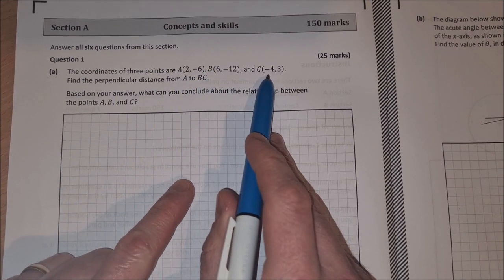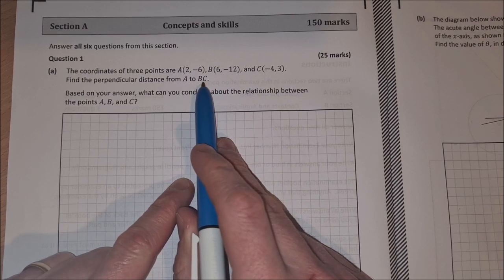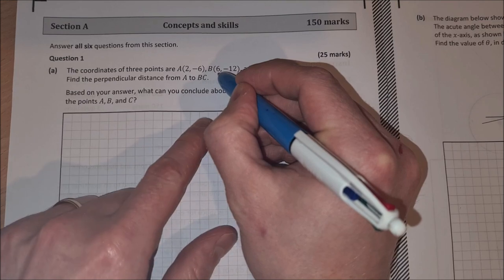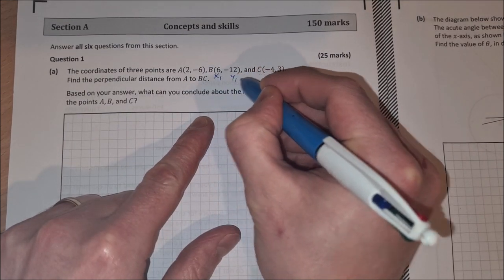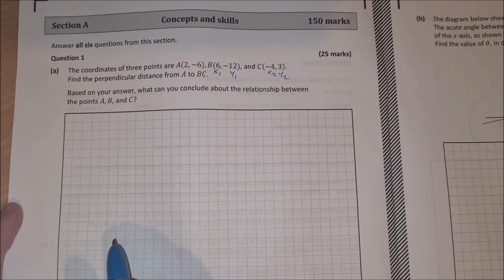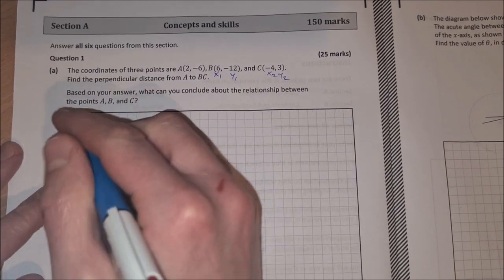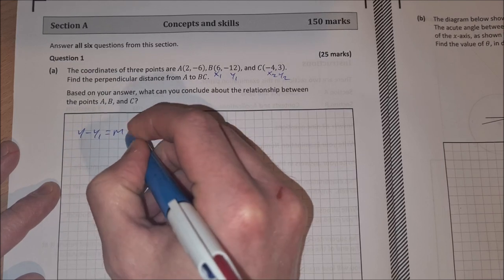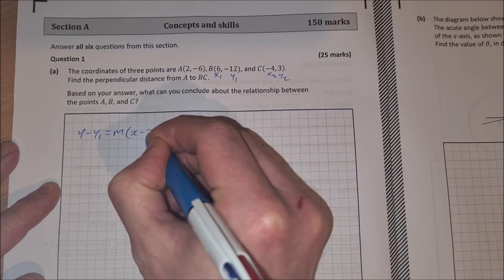Here's the point B and C, so we need to find the equation of BC first. I'm going to let this equal to x1, y1 and x2, y2. I'm going to then find the equation of this line, so that's y minus y1 is equal to m times x minus x1.